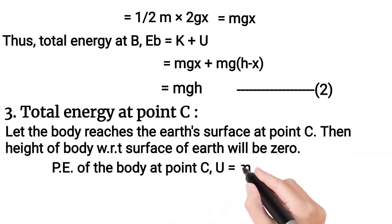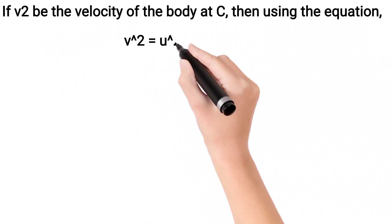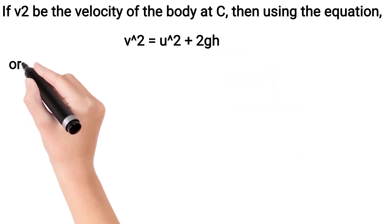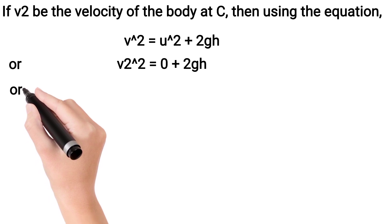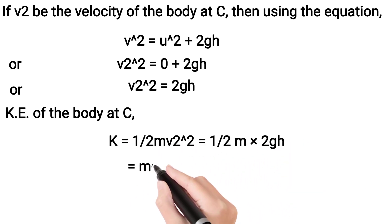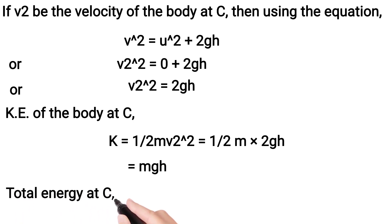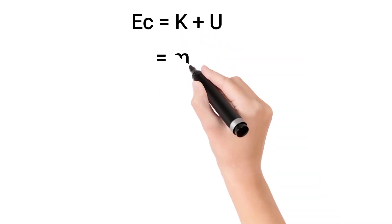Total energy at point C — point C earth surface पे है, तो उस body की height earth surface से 0 है। Potential energy of the body at C: U is equals to MGH, but H की value 0 है तो potential energy भी 0 हो जाएगी। अगर उस body की velocity V2 है point C पे, तो V² = U² + 2GH से V2² is equals to 2GH. So kinetic energy of the body at C: K is equals to half M V2², on putting value of V2² we get K is equals to MGH.